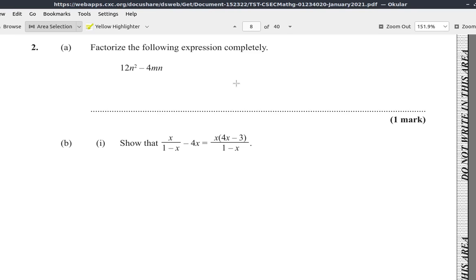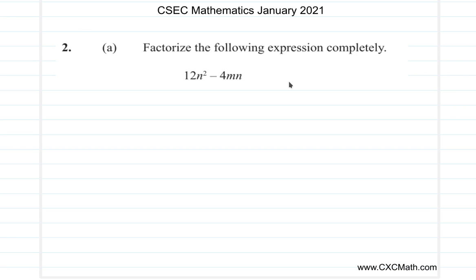We're now at question 2 of the January 2021 CSEC Mathematics past paper. It says here: factorize the following expression completely. I already copied that question. You have 12n squared minus 4mn. I want you to pause the video and try it.